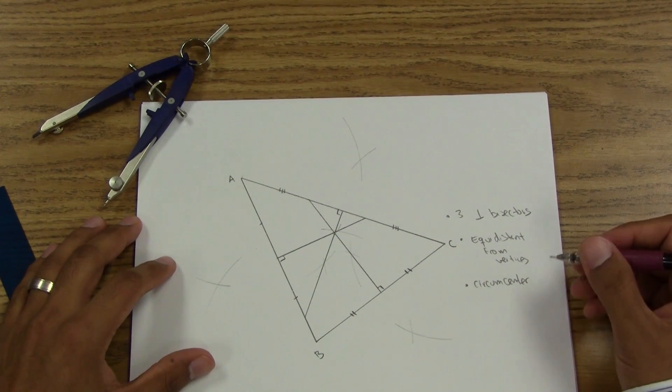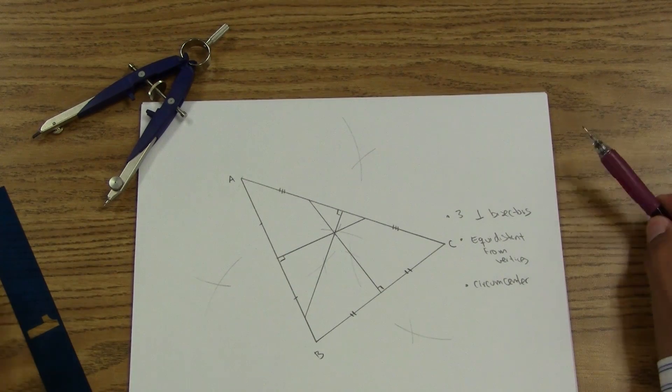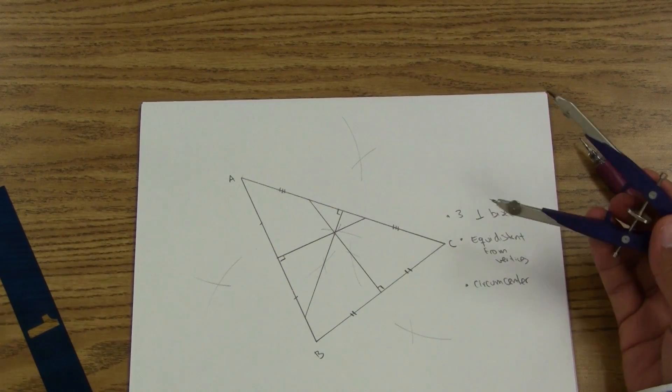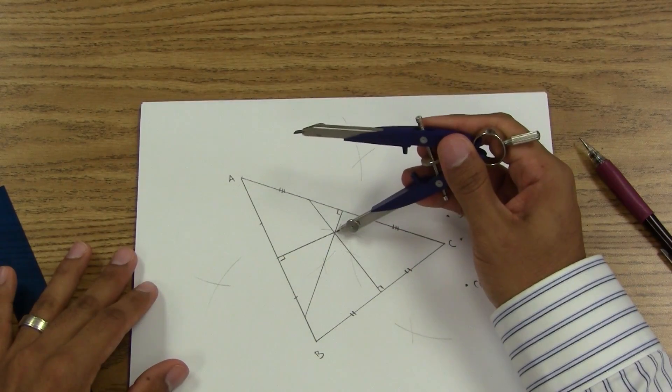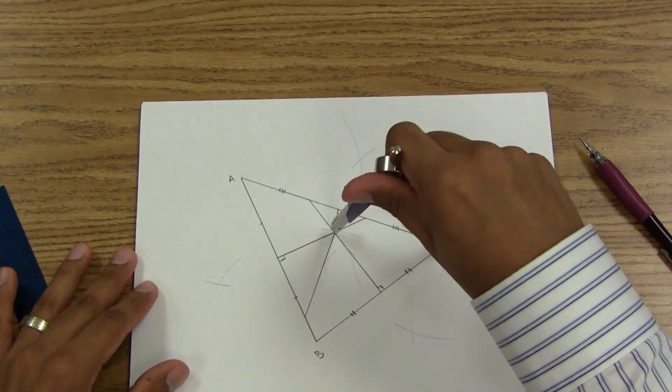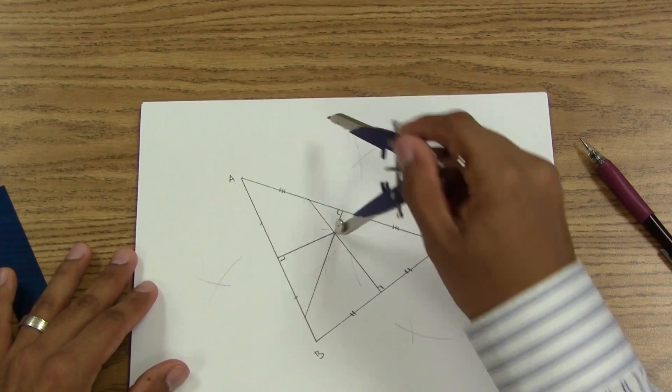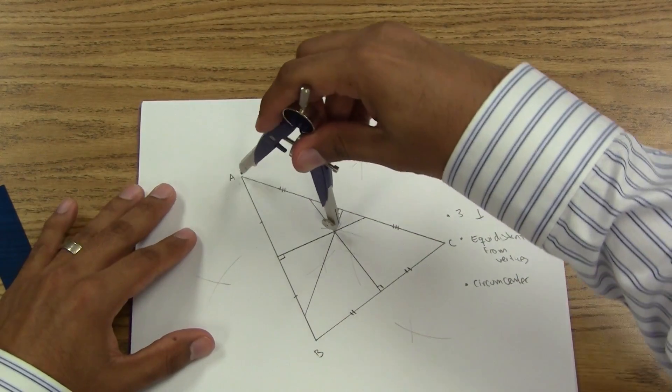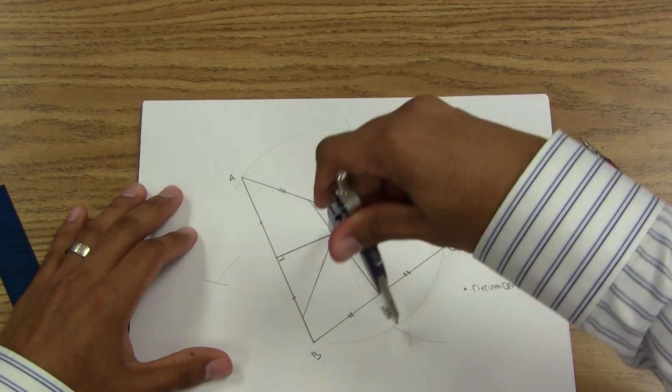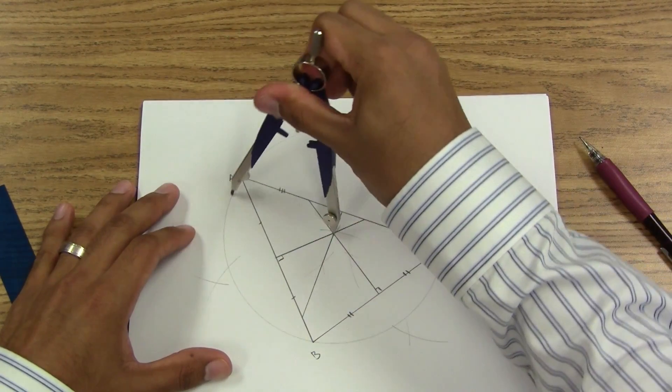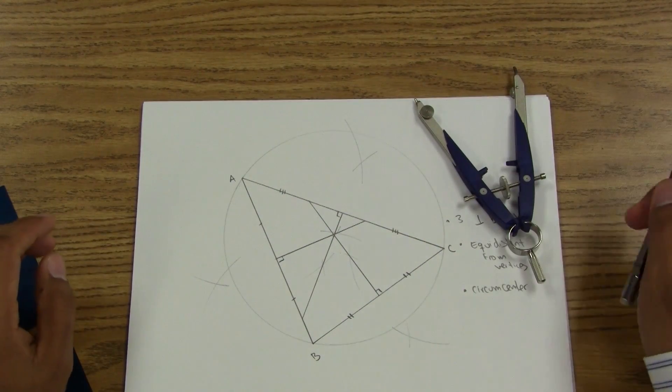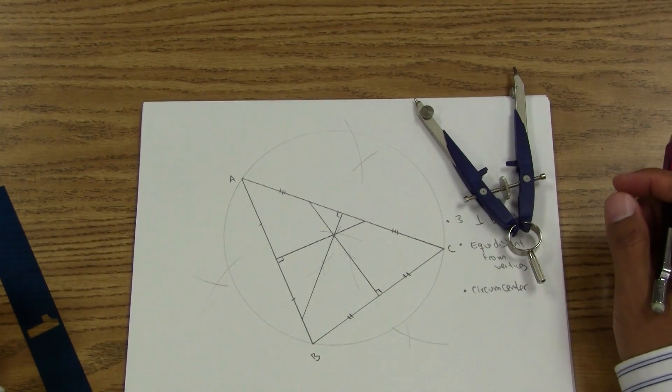Now, the circumcenter also has something else that's pretty important. The circumcenter will let you make a circumscribed circle. By using the circumcenter, all the vertices are the same distance from it. If I go ahead and connect them all, notice that I'm going to make a circle that is circumscribed and it's going all around my triangle.